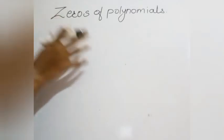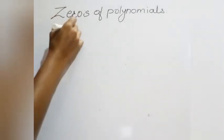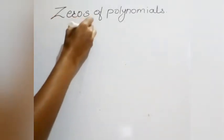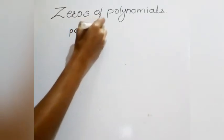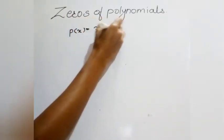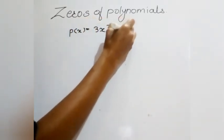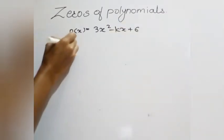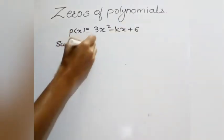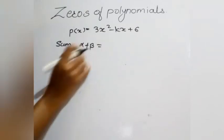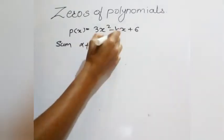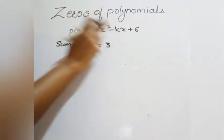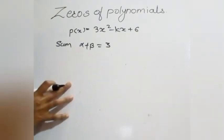Let's take another example. If p(x) is given as 3x² minus kx plus 6, and the sum of zeros — alpha plus beta — is given as 3, then what is the value of k?